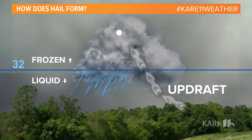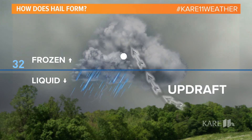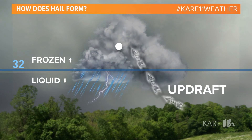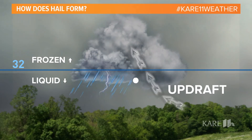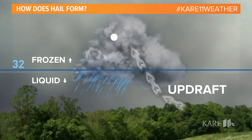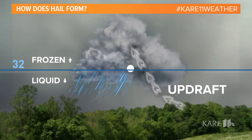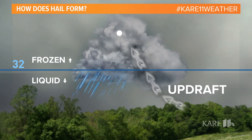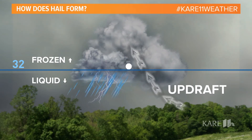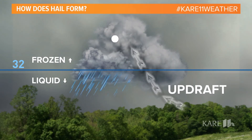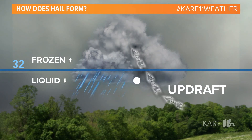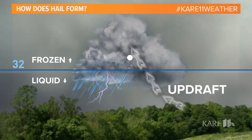Of course, you don't have to go very far up — only about 3-4 miles, even in the summer — to get below freezing in a storm cloud. You need a strong updraft, air that's moving upwards into the thunderstorm, pushing that hail further and further up and keeping it buoyant. It's that updraft that is key to creating hail.